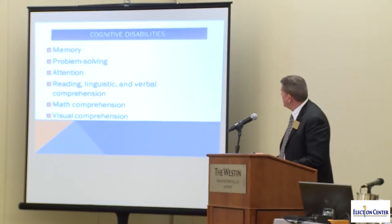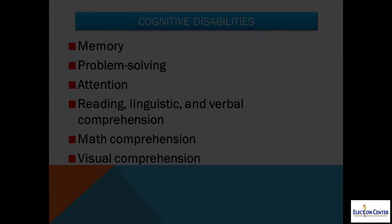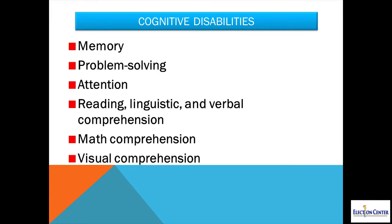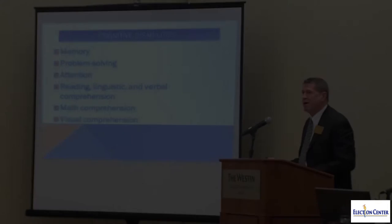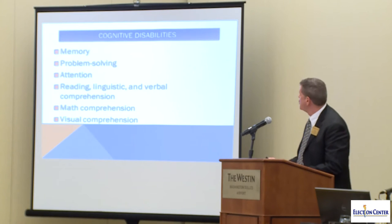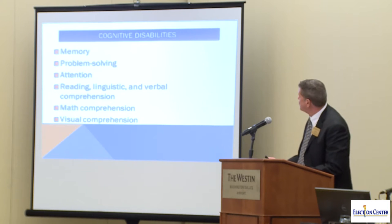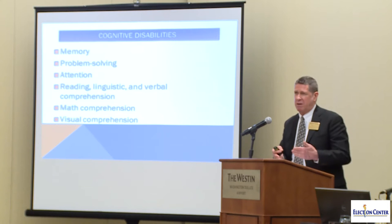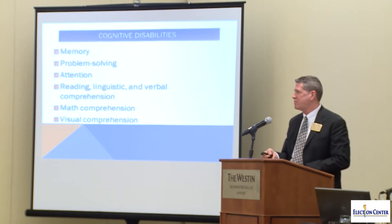A person with a cognitive disability has difficulty with memory — the ability of a user to recall what they've learned over time. They have difficulty problem solving, they can be easily frustrated, attention is an issue, reading and linguistic verbal comprehension, math comprehension, and visual comprehension. I'll talk about some of these in a little more detail as we go through this material.